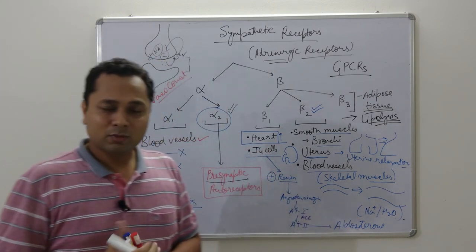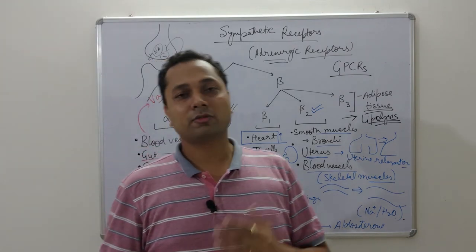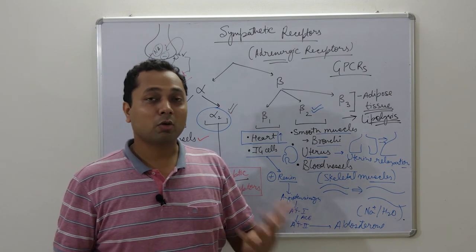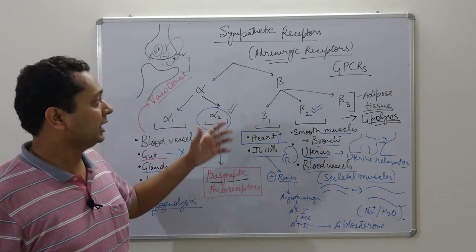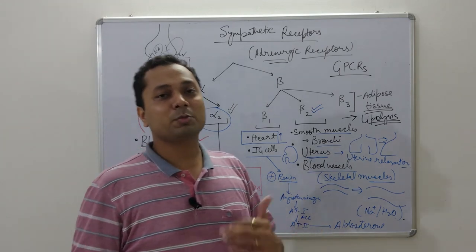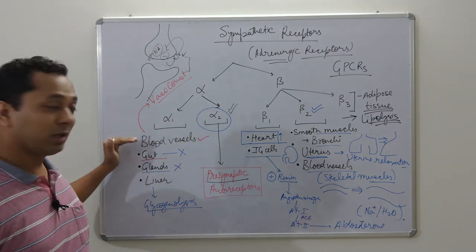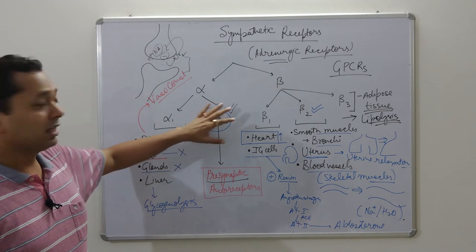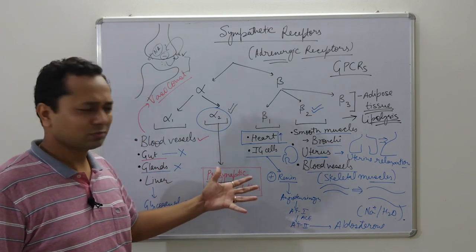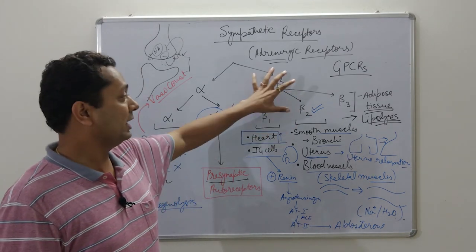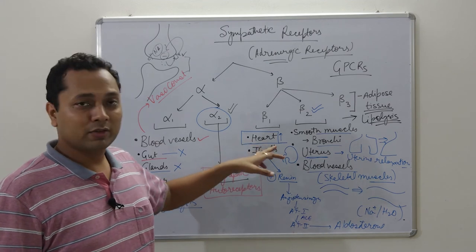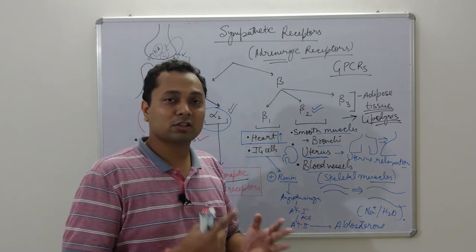To summarize this module: the autonomic nervous system is divided into two divisions — parasympathetic and sympathetic. The parasympathetic shows actions when the body is relaxed; the sympathetic acts when the body is under stress. Sympathetic receptors are categorized into alpha and beta. Alpha has two subtypes — alpha-1 and alpha-2 — and beta has three subtypes: beta-1, beta-2, and beta-3. Alpha-1 is located on blood vessels, gut, glands, and liver.